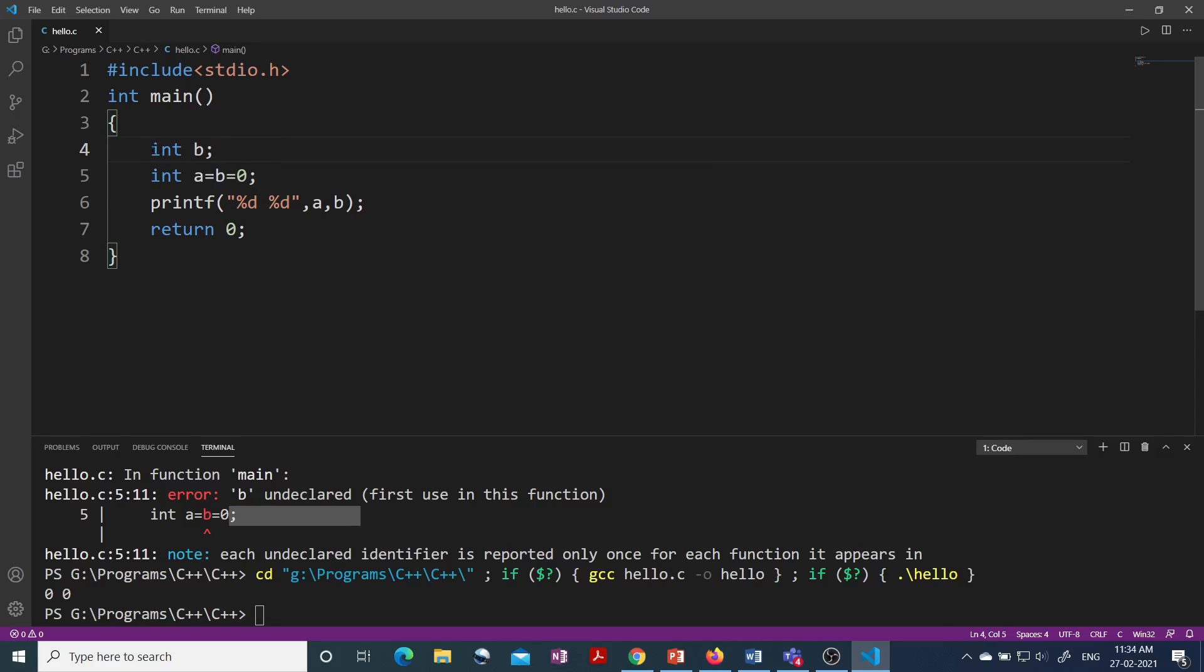So here you have to see that int b is defining the variable b and here b is getting initialized with 0. Here int a is saying that I am defining a variable a and at the same time I am initializing it with 0 value. So now this statement will work if we have int b written.